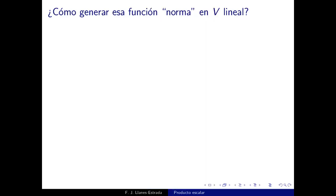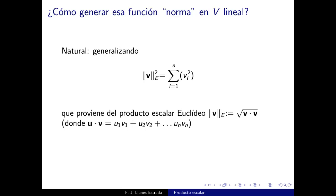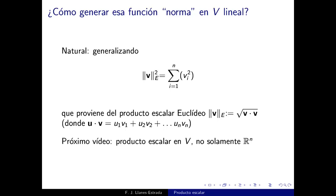¿De dónde sacamos esta función norma sobre el espacio vectorial? La más natural es generalizando la fórmula euclídea: la norma euclídea es la raíz de la suma de las coordenadas cartesianas al cuadrado, que es el producto escalar de v consigo mismo: ‖v‖ = √(v·v). En el siguiente vídeo abstraeremos esta noción de producto escalar de ℝⁿ a cualquier espacio lineal.